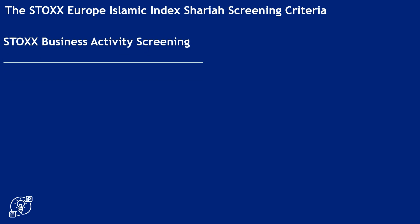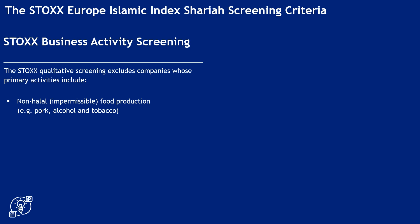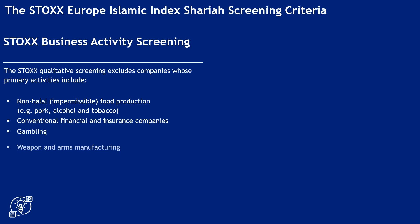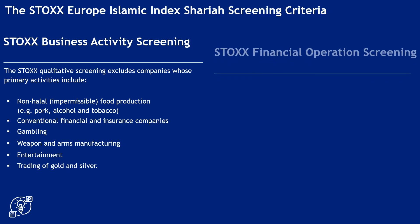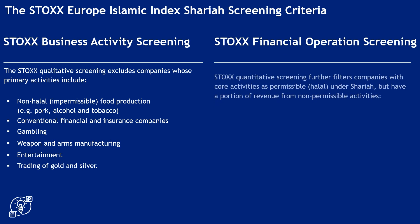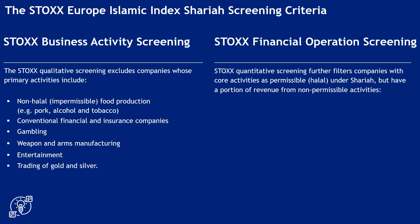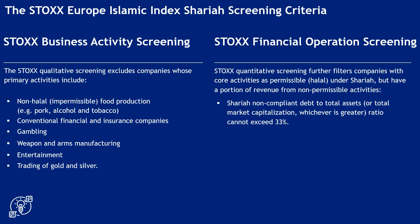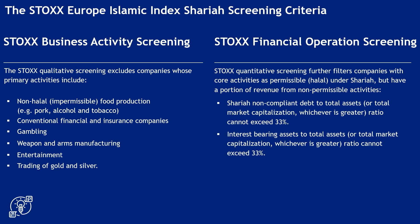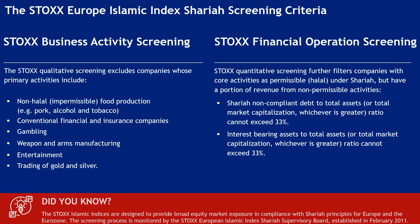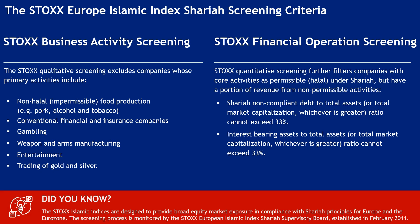Stoxx Europe Islamic Index — Business Activity and Financial Operations Screening. The Stoxx qualitative screening excludes companies whose primary activities include non-halal food production, conventional financial and insurance companies, gambling, weapons and arms manufacturing, entertainment, and trading of gold and silver. The quantitative screening further filters companies with core activities permissible under Shariah but having a portion of revenue from non-permissible activities: Shariah non-compliant debt to total assets cannot exceed 33%, and interest-bearing assets to total assets cannot exceed 33%.